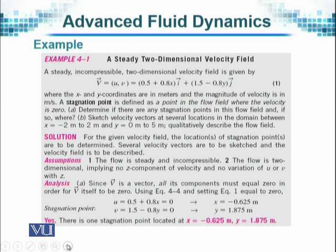Secondly, they want us to sketch the velocity vector at several locations in the domain between X equals minus 2 to 2 meters and for Y, the variation is from 0 to 5 meters. And then qualitatively describe the flow field. So, three questions in one question.